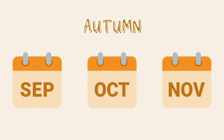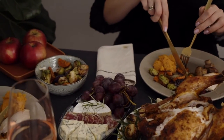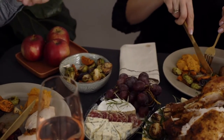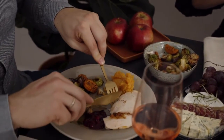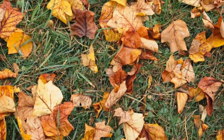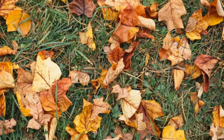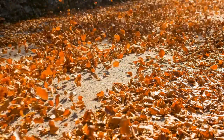Autumn, also known as fall, takes place in September, October, and November. This time of the year is typically associated with the harvest, which we can see reflected in holidays like Thanksgiving. You might also notice that the green leaves start to turn orange, yellow, and brown. The days become shorter and the air becomes crisp.